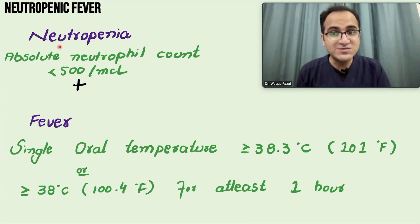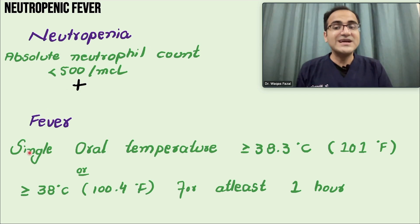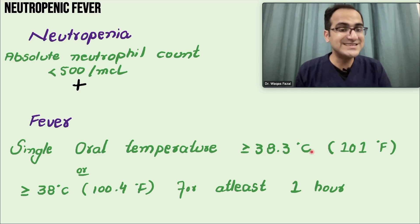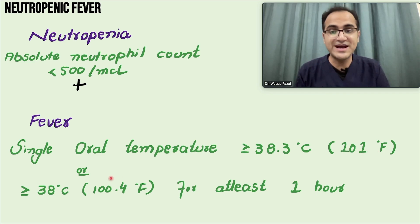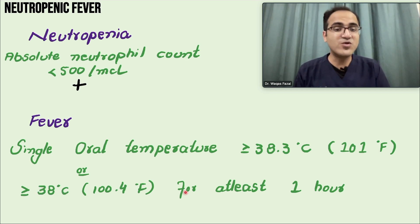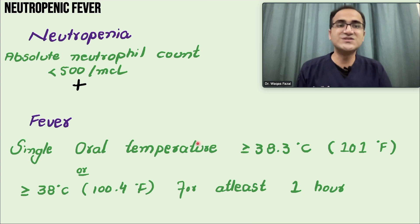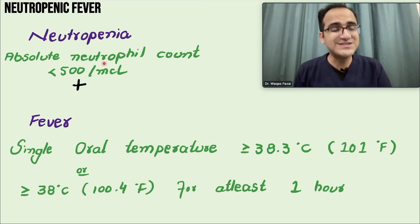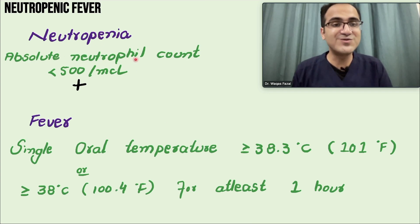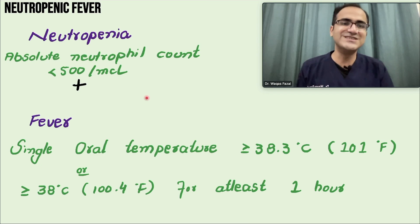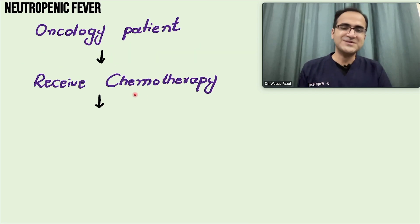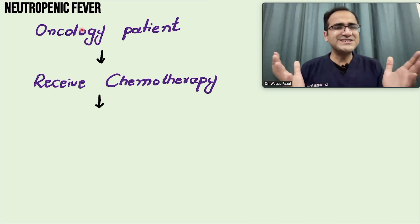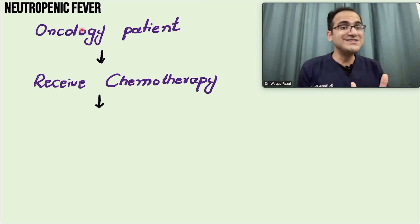When the neutrophil count is low, the body is prone to infections, and when the body is prone to infections there is fever. Fever is defined as a single oral temperature greater than 38.3°C (101°F), or greater than or equal to 38°C for at least one hour. So fever in the presence of neutropenia with absolute neutrophil count less than 500 is called neutropenic fever.